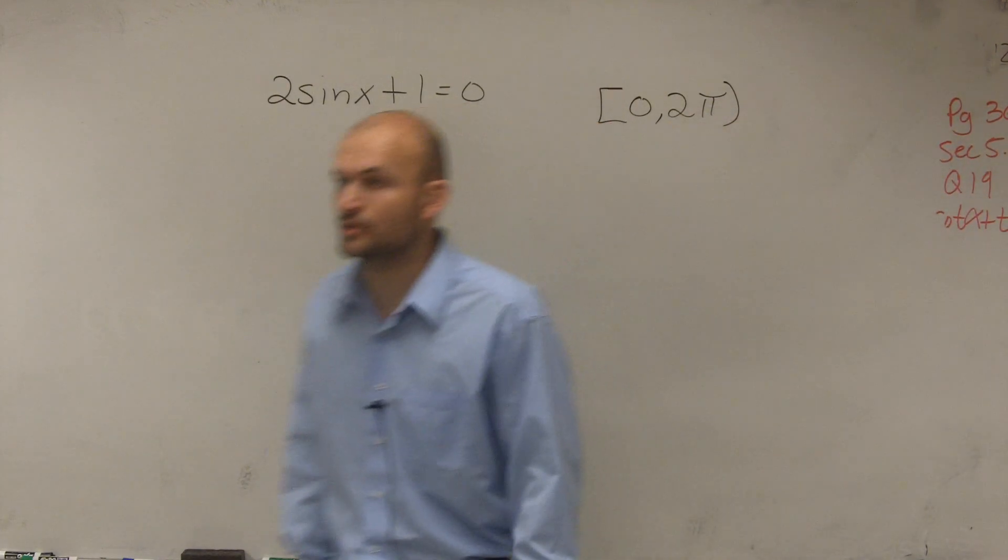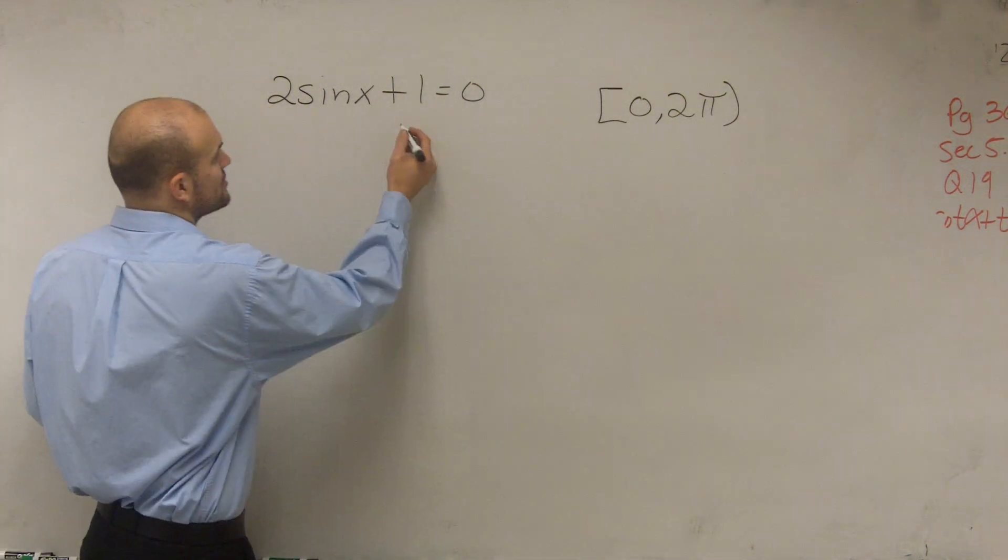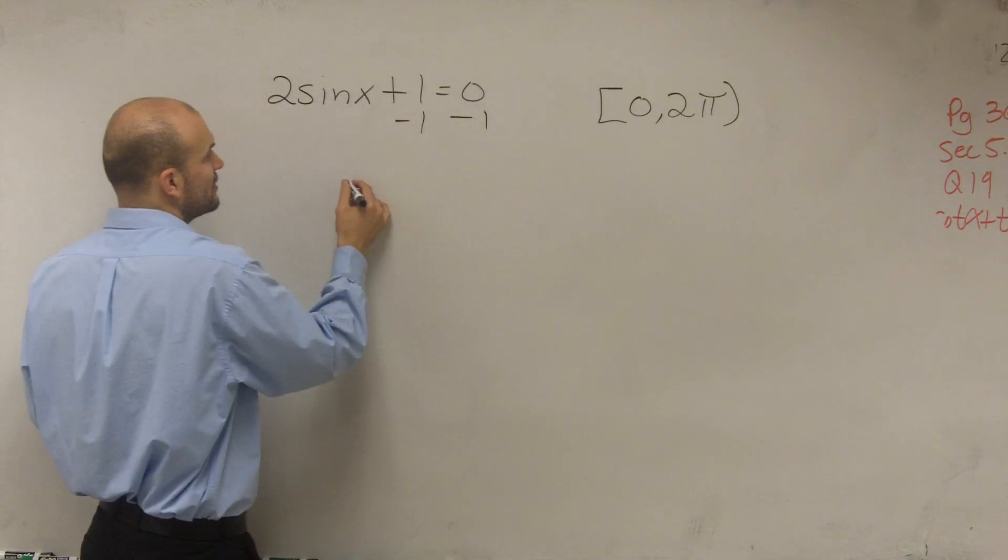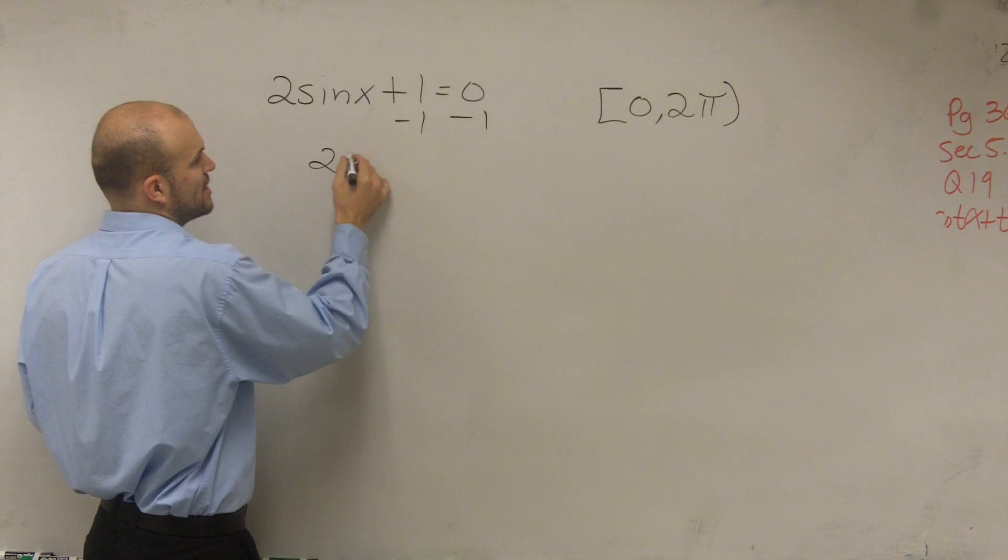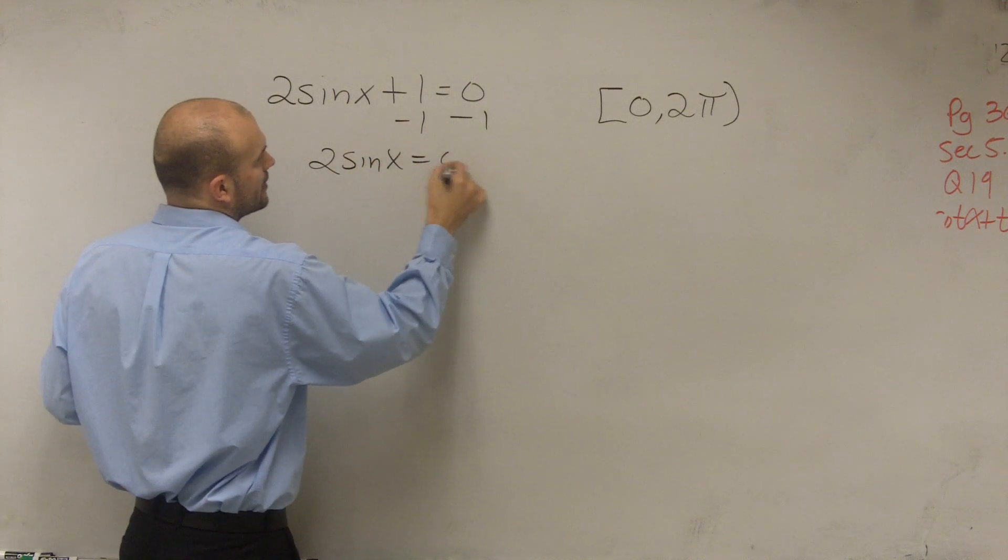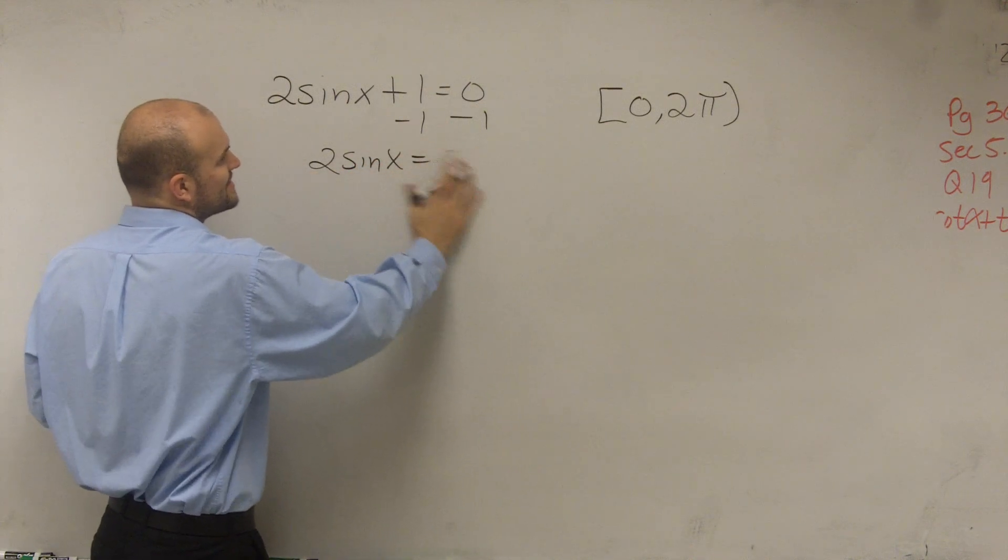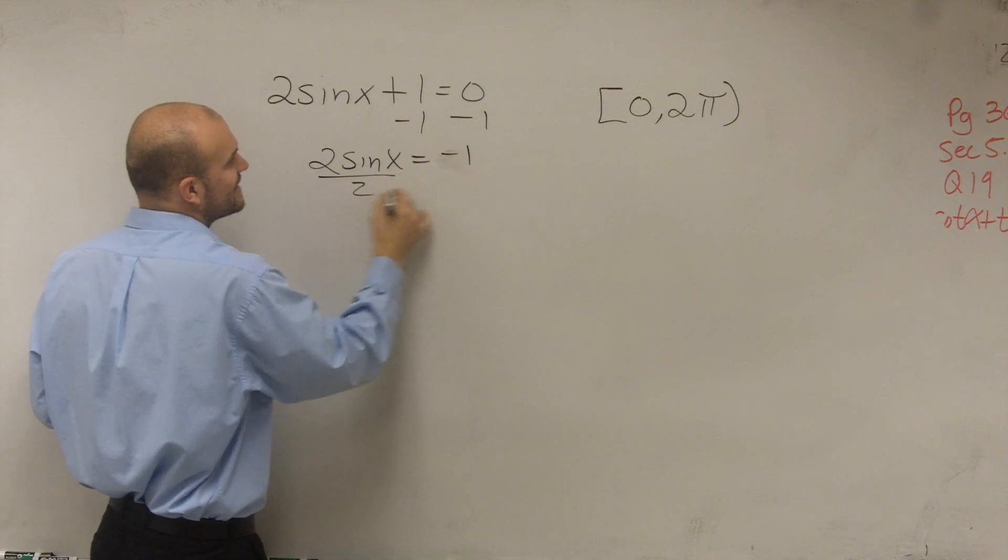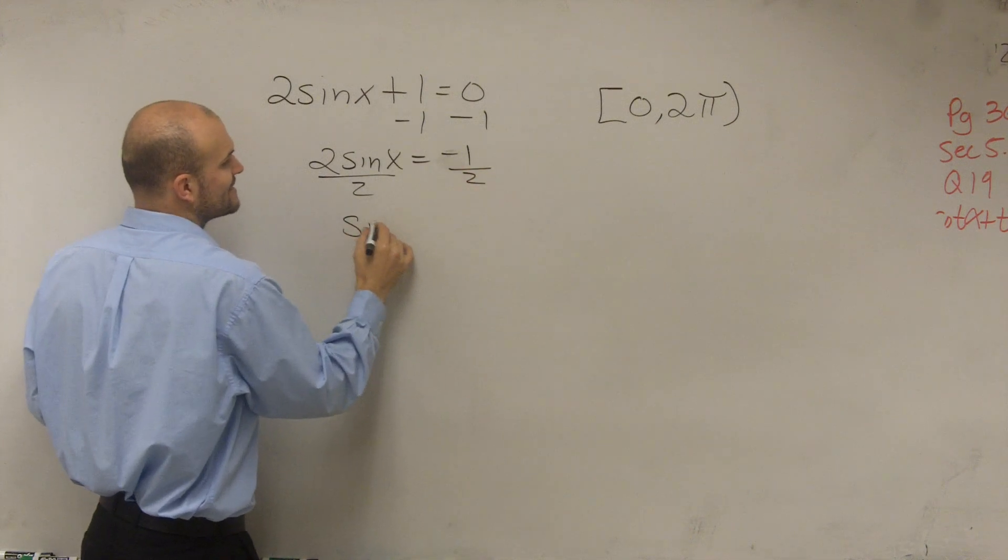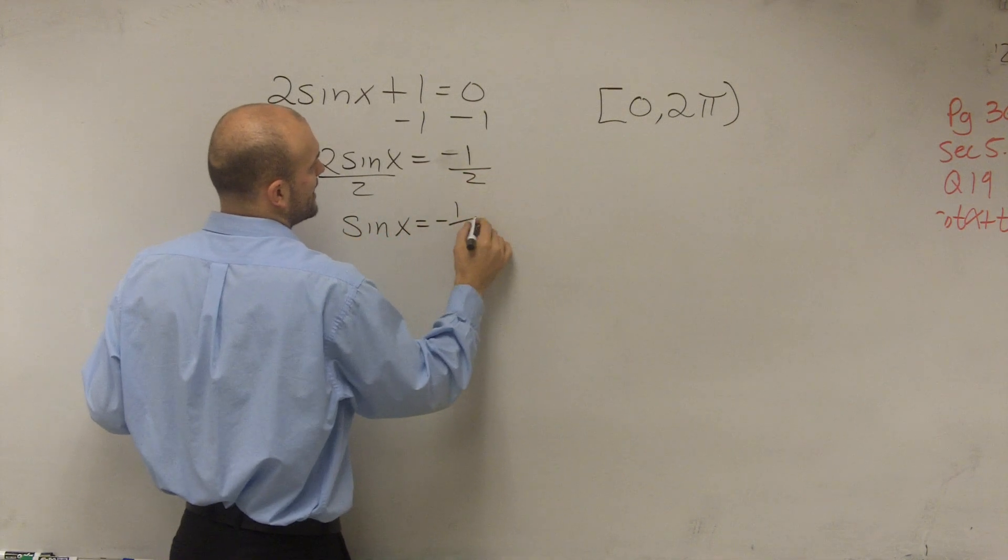So what we're simply going to do is solve for x. Therefore, I subtract 1 first on both sides by using the subtraction property of equality. Equals 0, I'm sorry, equals negative 1. Then I divide by 2, and I get sine of x equals negative 1 half.